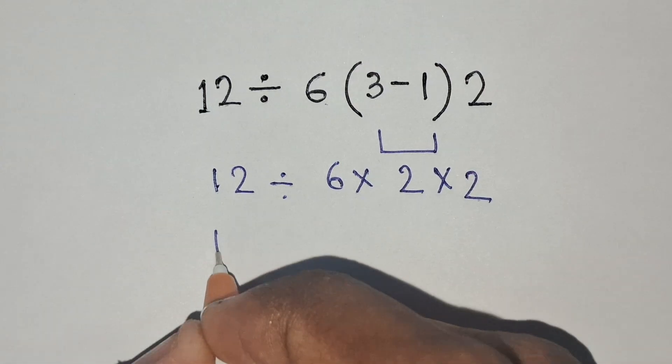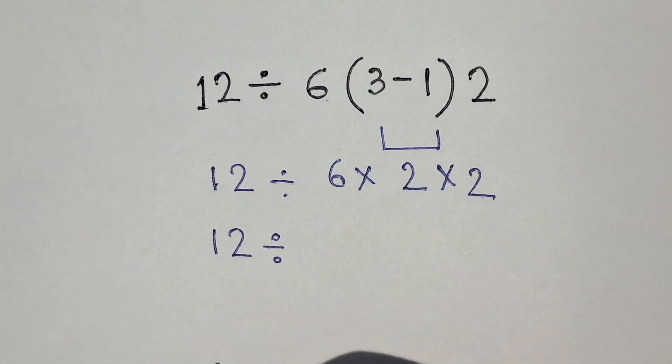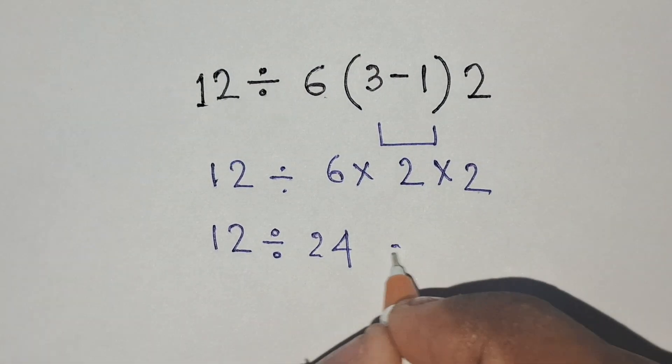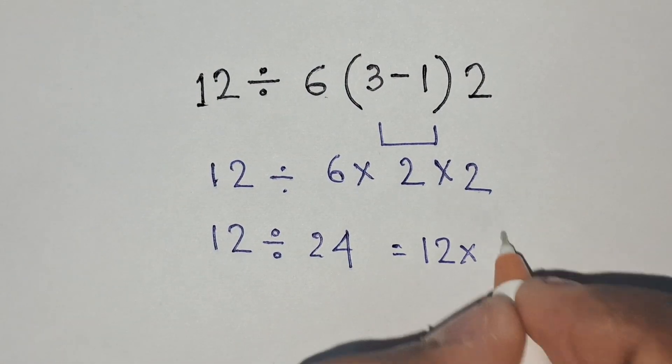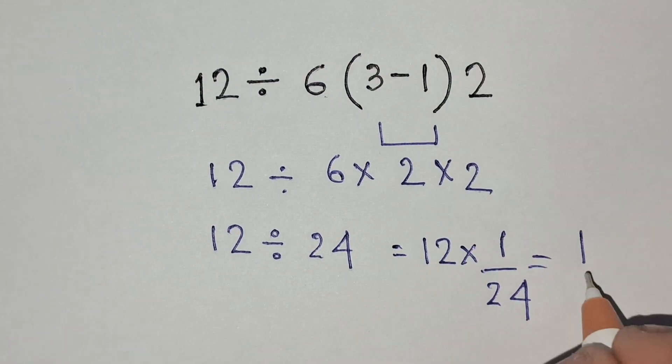Now, again 12 divided by 6 times 2 times 2 equals 24. So, it equals 12 times 1 by 24, that is equals to 1 by 2.